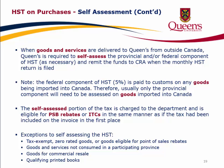The self-assessed portion of the tax is charged to the department and is eligible for PSB rebates or ITCs in the same manner as if the tax had been included on the invoice. Exceptions to self-assessing the HST include tax-exempt or zero-rated goods, goods eligible for point-of-sale rebates, goods and services not consumed in a participating province, goods for commercial resale, and qualifying printed books.